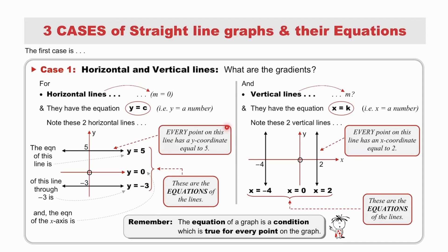Note these horizontal lines below. Every point on this graph here has a y-coordinate equal to 5. Therefore, the equation of this line is y equal to 5. And of this line, through minus 3, the equation is y equal to minus 3. And so, the equation of the x-axis is y equals 0. Y equals 5, y equals 0, and y equals minus 3 are the equations of these horizontal lines.